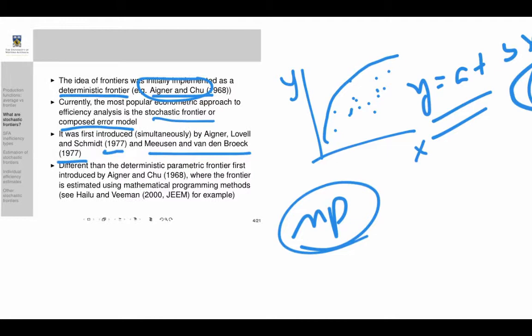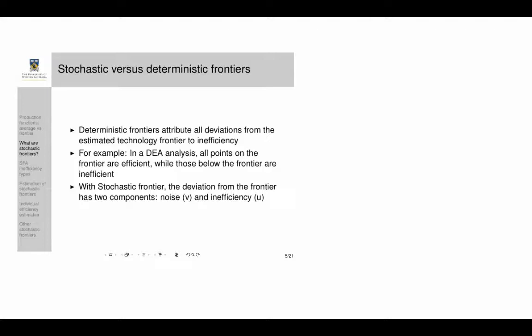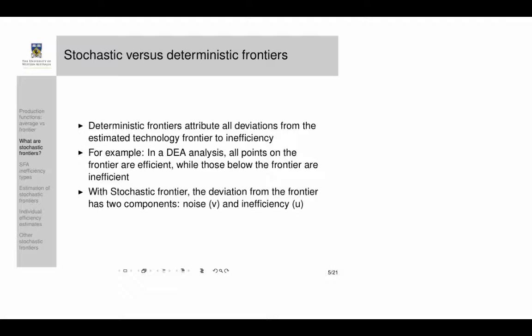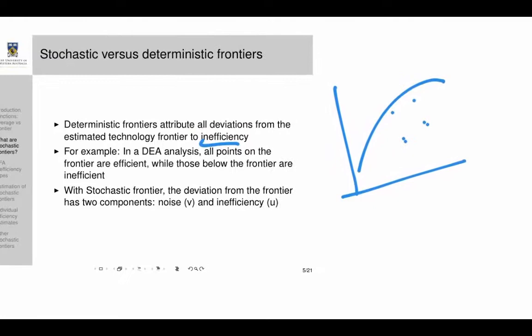The key difference between the deterministic and stochastic frontiers is that the stochastic frontier includes noise while the deterministic one does not. In the deterministic frontier, all deviations from the frontier are attributed to inefficiency — there is no other interpretation. This is similar to data envelopment analysis where all deviations from the frontier are considered to be inefficiency.